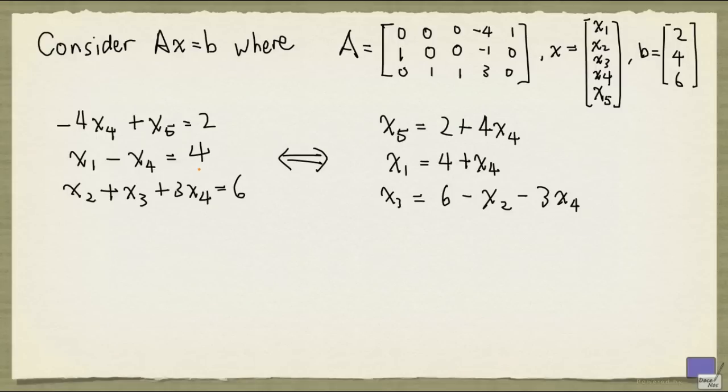What happens if you set x2 and x4 to 0? So let's do that. Well, if x4 is 0, then x5 is just 2. And if x4 is 0, x1 is just 4. And if x2 and x4 are 0, x3 is just 6.